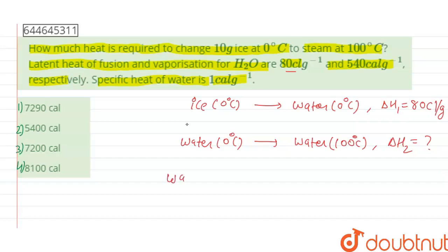The third process is water at 100 degree Celsius changes into steam or vapor at 100 degree Celsius. This process involves the heat of vaporization, delta H3, given as 540 calorie per gram.